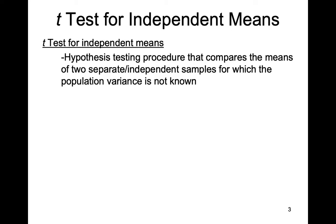The next t-test we're going to learn is a t-test for independent means, sometimes called a t-test for independent samples. This is a hypothesis testing procedure that compares the means of two separate — otherwise known as independent — samples for which the population variance is not known.